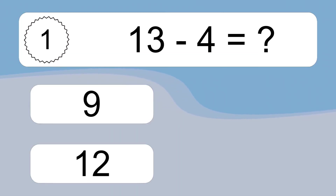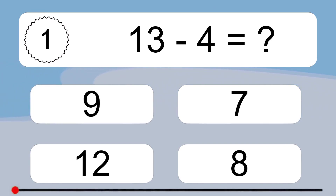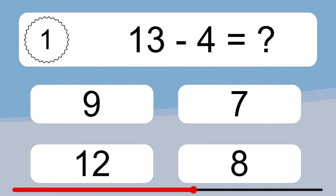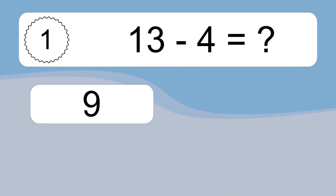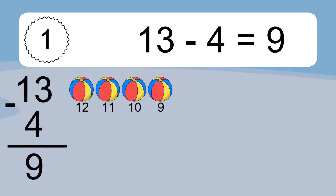13 minus 4 equals what? 13 minus 4 equals 9. Let's count it: 12, 11, 10, 9.